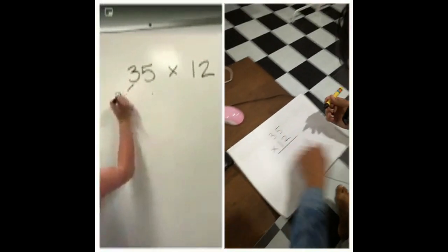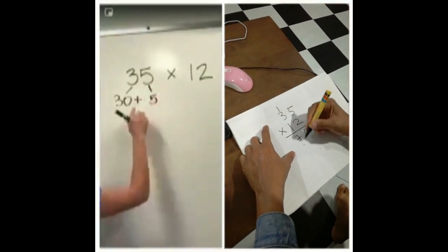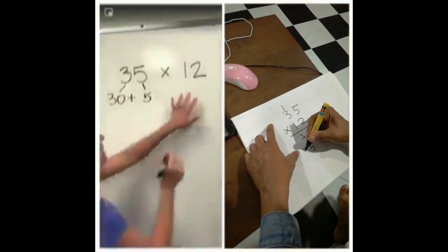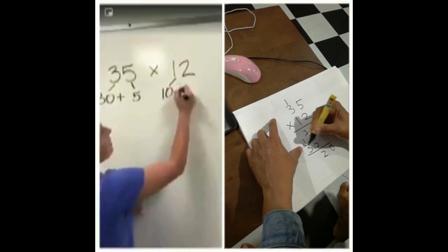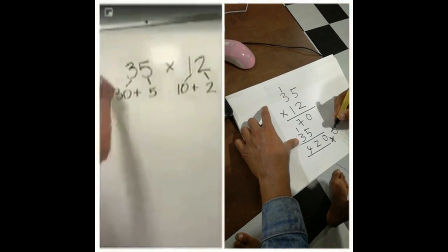I've got three tens, which is 30, and five ones, so that is 30 plus 5. Twelve is one ten plus two ones. Okay, so that's step one.